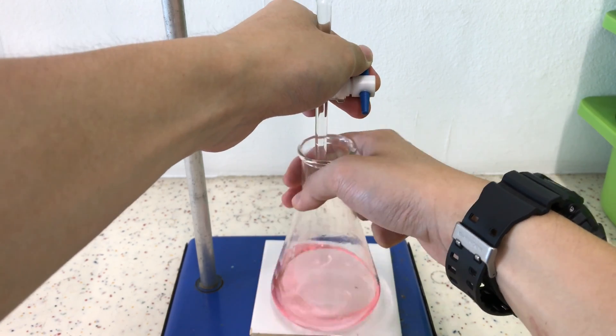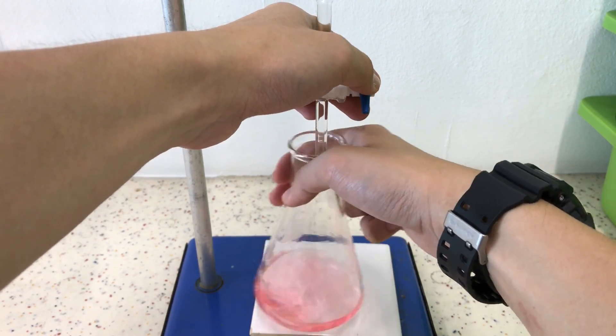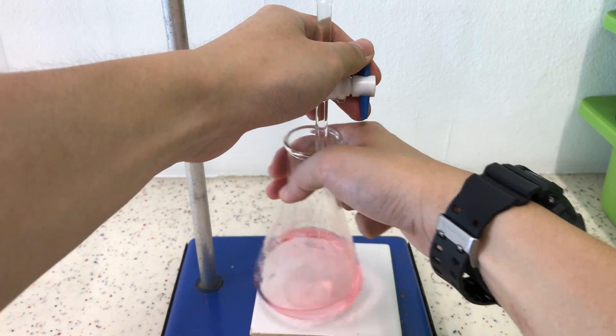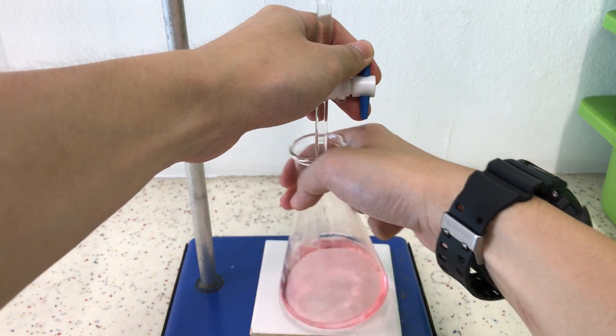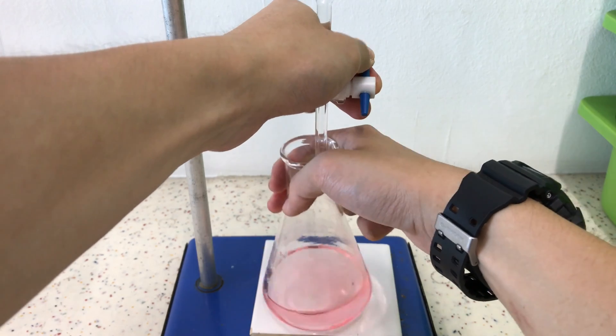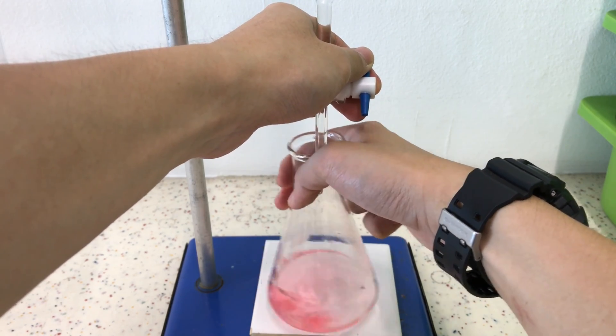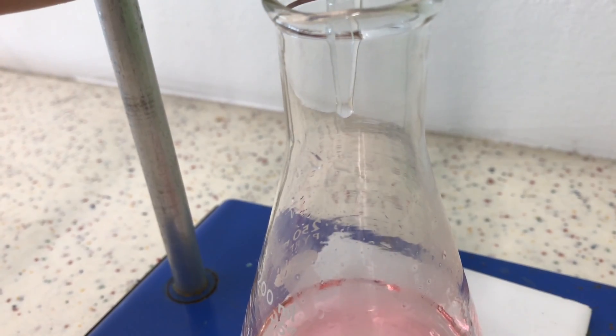Nearing the end point, we will slow down the addition of the titrant and do dropwise addition with swirling after each drop. Now let's fast forward a little and see how dropwise addition is being carried out.